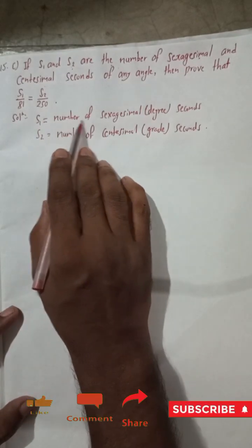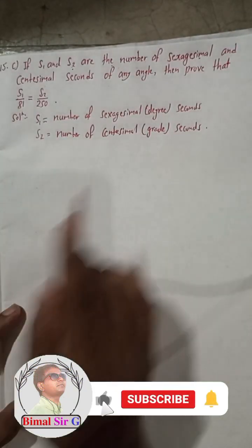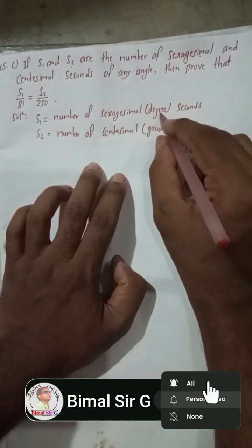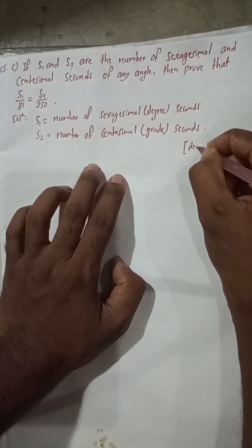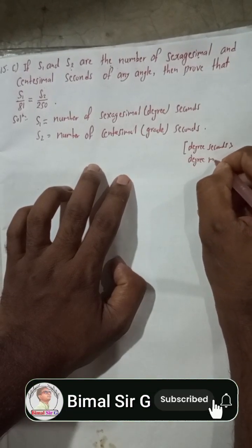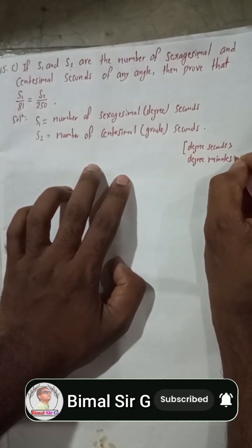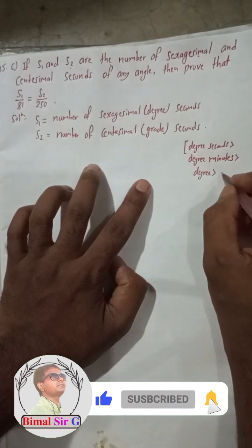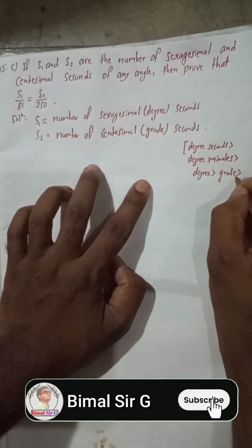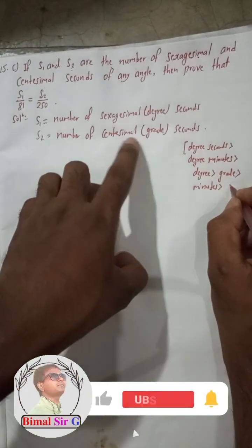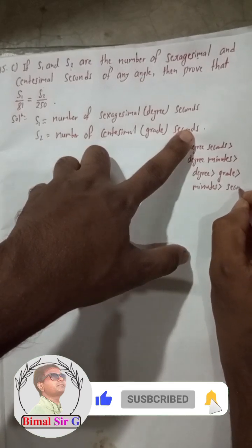Now we will follow a flowchart. We start with degree seconds, then change into degree minutes, then degree minutes into degrees, then degrees into grade, then grade into grade minutes, and finally grade minutes into grade seconds — because s2 is the number of grade seconds.